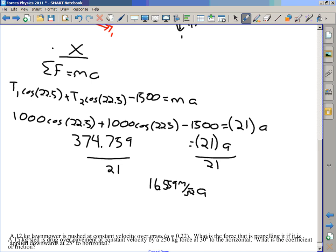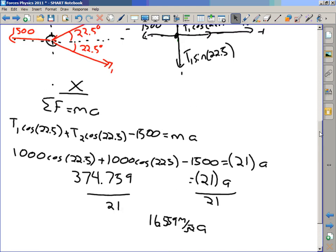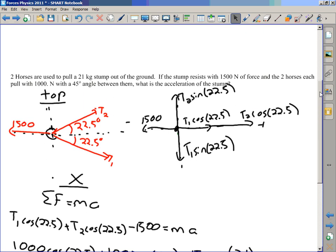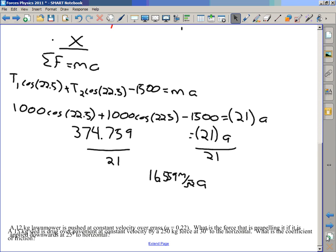16.559 meters per second squared. Six sig figs. How many do I get? Let's get back and look. Oh, there's a decimal point after 1000 so there's four there. 1500, two. So as it comes, 17.